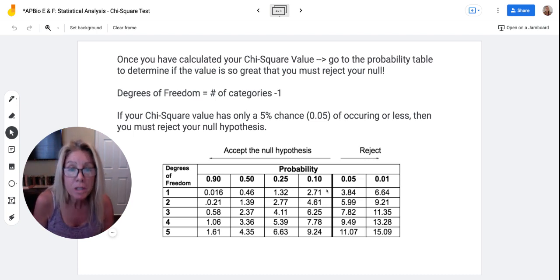Now to reject, generally speaking, the line in the sand that's drawn is about 5% probability. If it would only happen 5% or less, then we got to reject this null because it's not likely to have happened due to chance. If it's anything above 5%, then you can accept your null hypothesis.